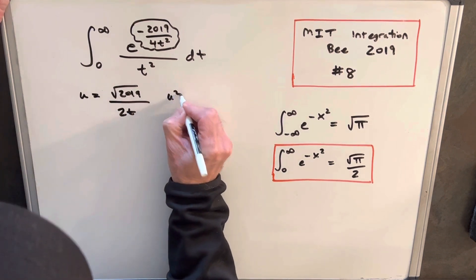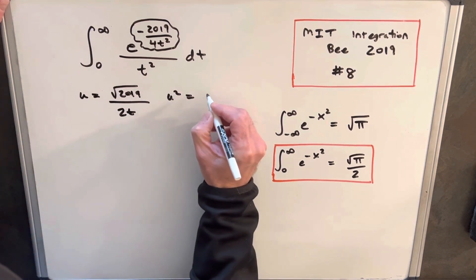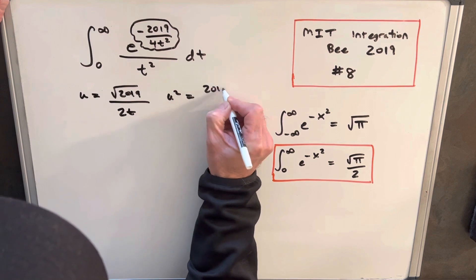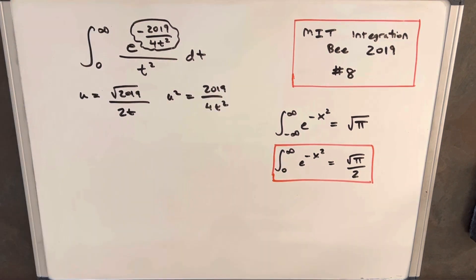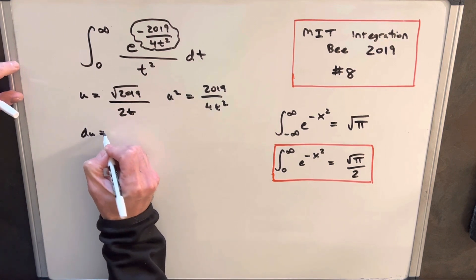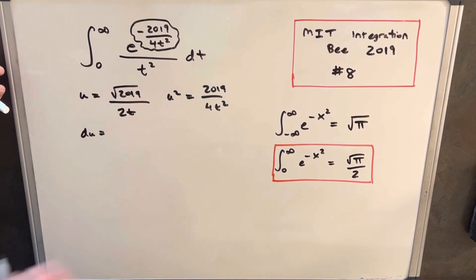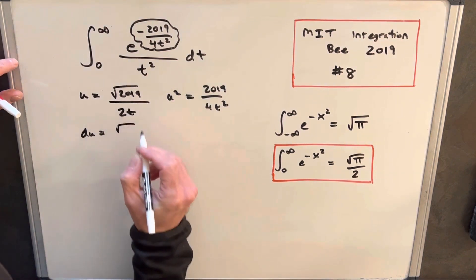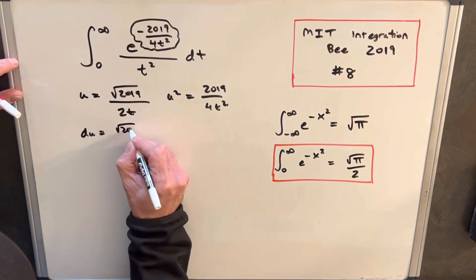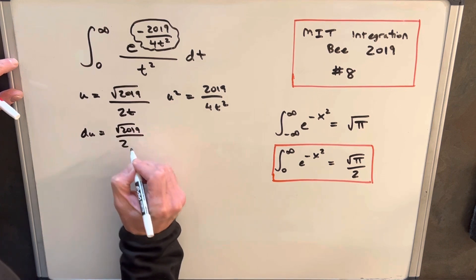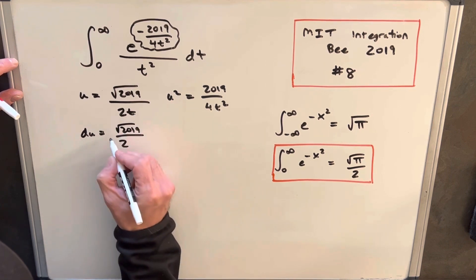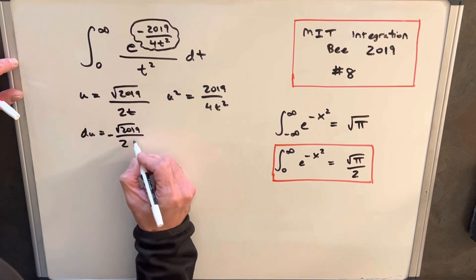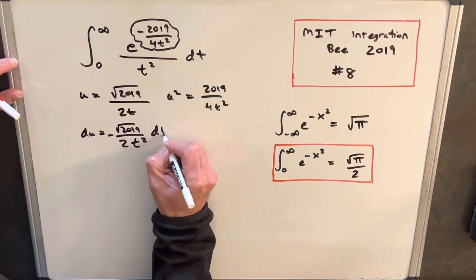Just to make it clear, you'll notice that u-squared is actually 2019 over 4t-squared. Next we'll find our du value. That's going to be the same constant, square root of 2019 over 2, but then we're going to have a negative sign from the derivative and a t-squared in the denominator, times dt.